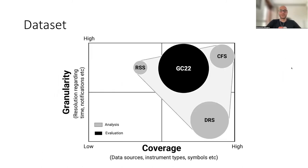Here is an overview of the data sets we use for the analysis and evaluation of our work. For the analysis, we were provided with three different data sets represented in gray in this figure. In this figure, we show on the X axis, the coverage, so how many different data sources, instrument types, symbols, so somehow the heterogeneity of these data sets. And on the Y axis, the granularity, for example, the resolution in terms of time.